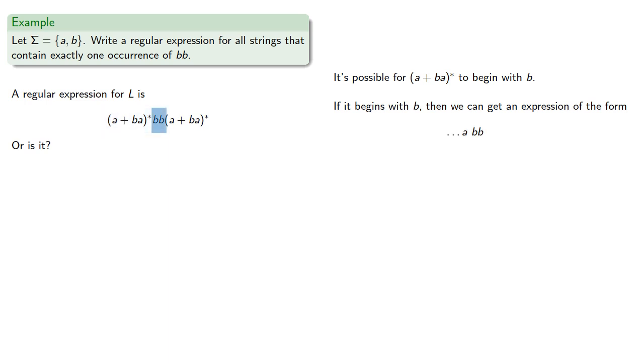BA, which actually has two occurrences of the pair BB. The first two B's are the first occurrence, and the second and third B's are actually the second occurrence.